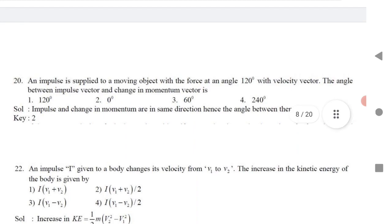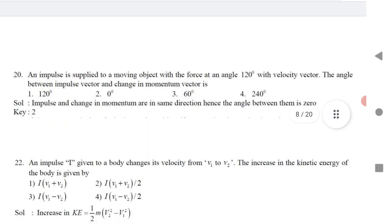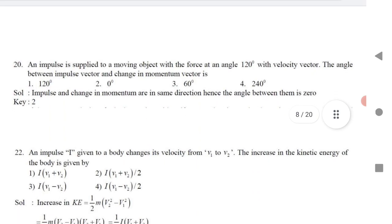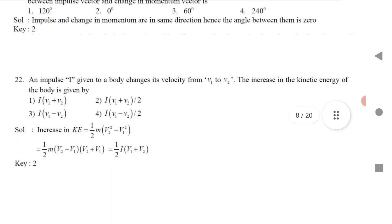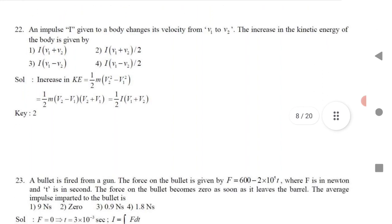Question 13 (tricky): An impulse is supplied to a moving object with a force at an angle of 120 degrees. The angle between the impulse vector and the change in momentum — since impulse and change in momentum are always in the same direction, the angle between them is always zero.